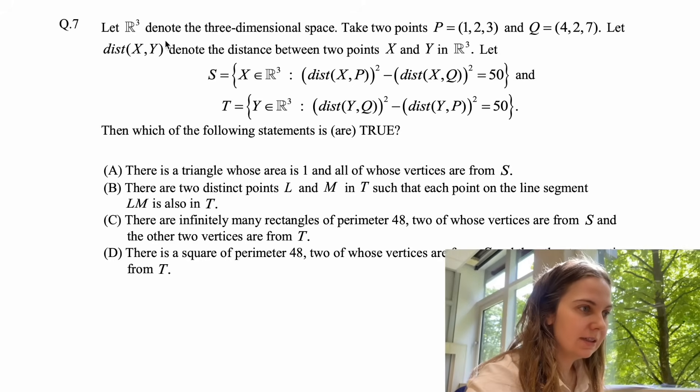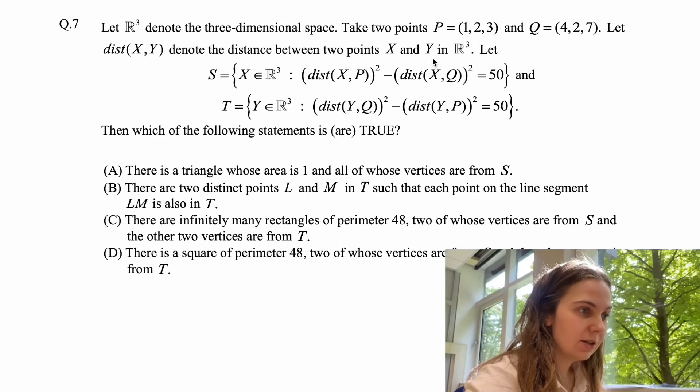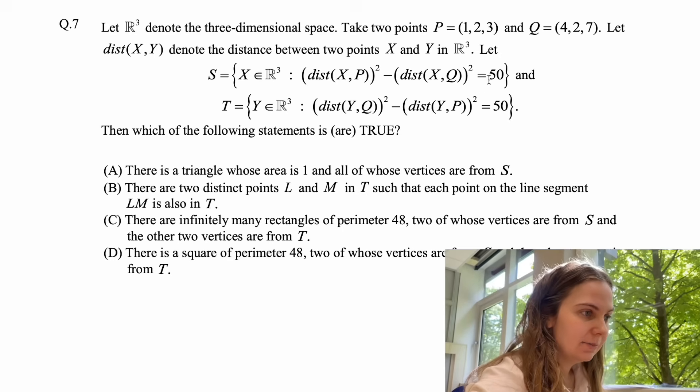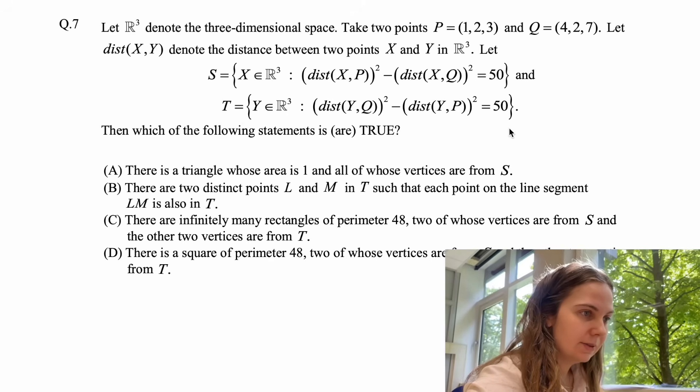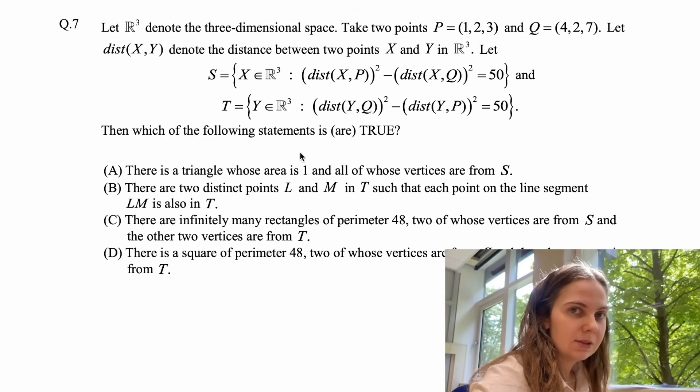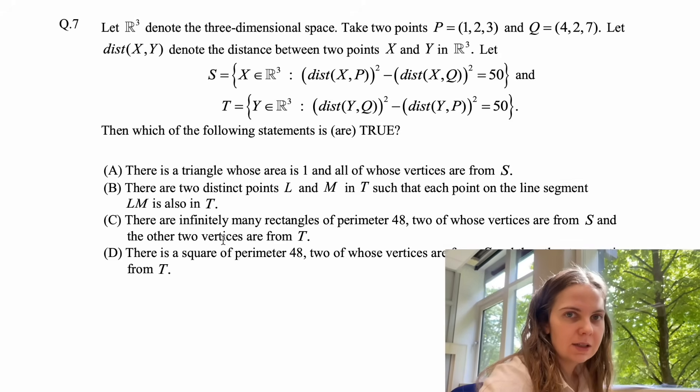And the problem is the following. Let R3 denote the three-dimensional space. Take two points p and q. Let dist(x,y) denote the distance between the two points x and y in R3. Let S be the set of points in R3 such that the distance between x and p squared minus the distance between x and q squared is equal to 50. Let T be the set of points y in R3 such that the distance between y and q squared minus the distance between y and p squared is also equal to 50. And we're given a list of four statements and our task is to determine which of these statements are true if any.